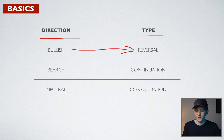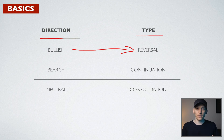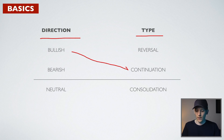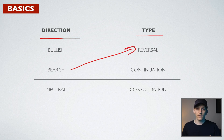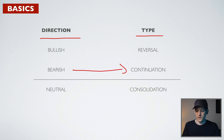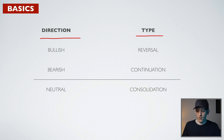A bullish reversal means the price is coming down and reversing to the upside. A bullish continuation is where you are in an uptrend and the chart pattern tells you the trend will continue, so you also trade to the upside. Conversely, a bearish reversal is when you have an uptrend and the chart pattern tells you that uptrend is going to reverse, so you take a bearish position. A bearish continuation means you are in a downtrend and the chart pattern tells you that downtrend will continue.